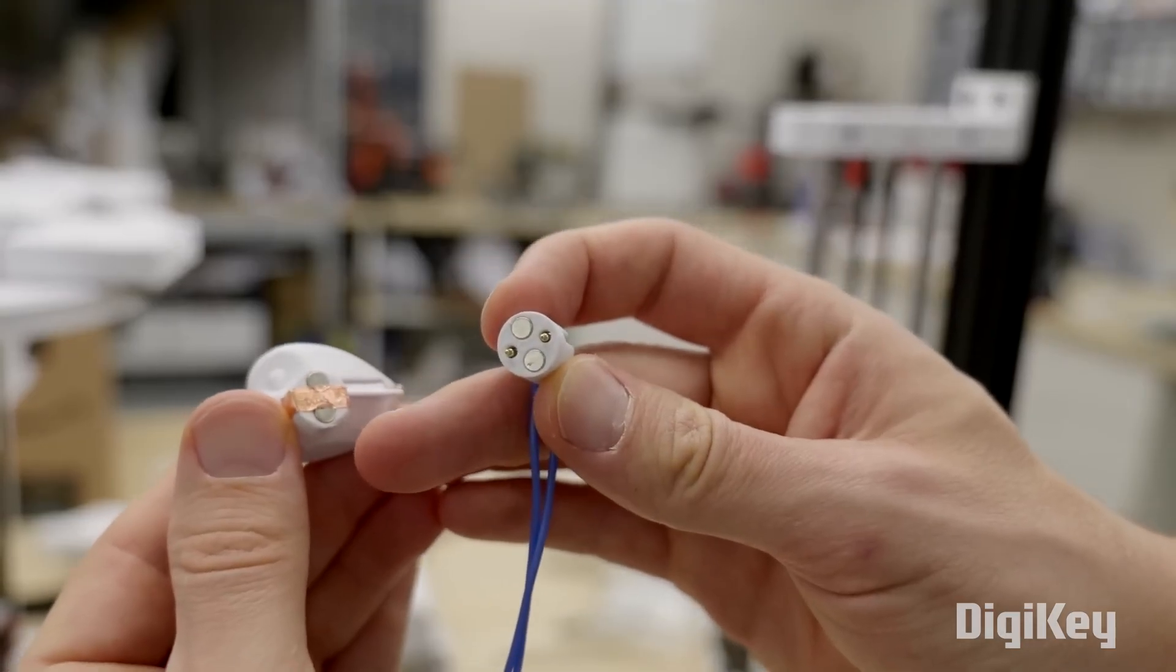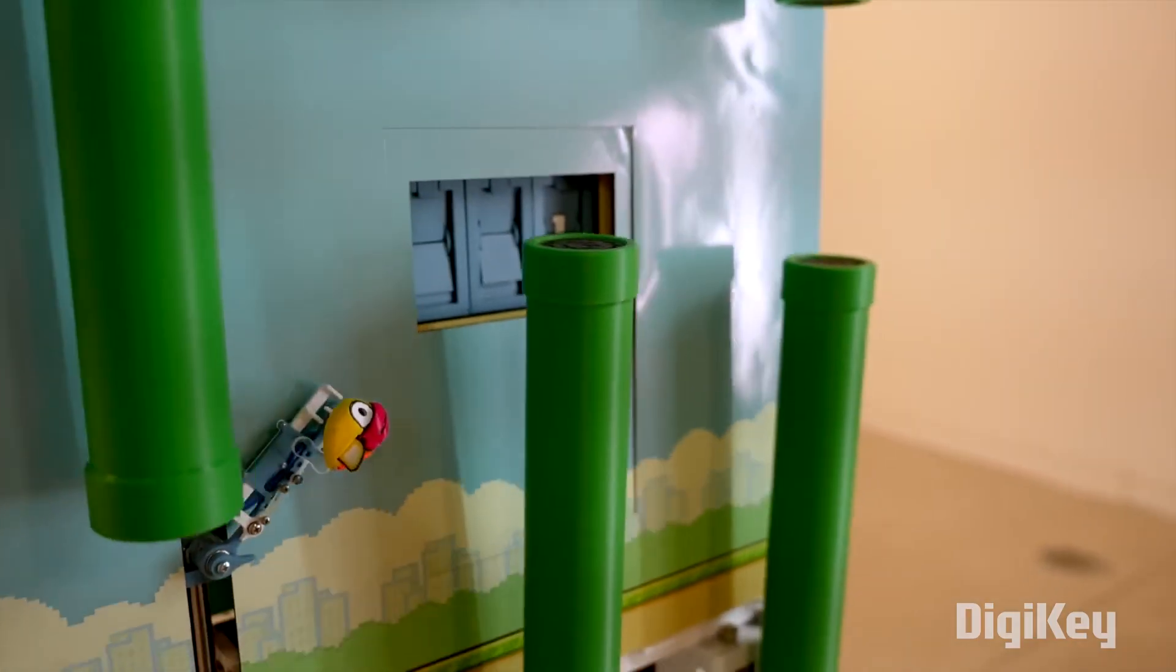When it hits an obstacle, the bird will fall to the ground, opening a circuit and triggering the game over event.